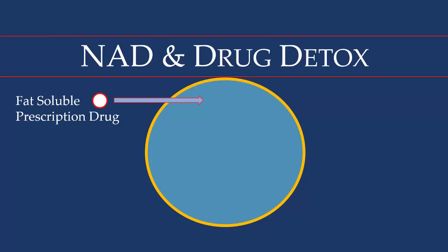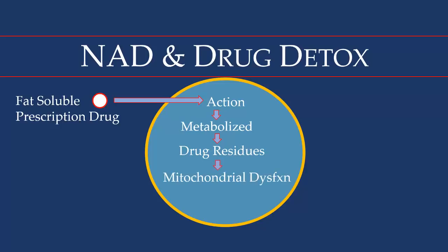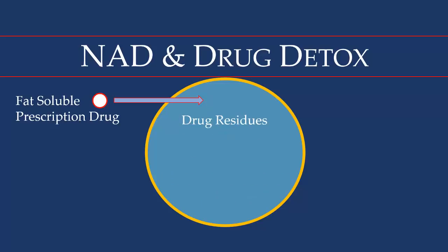So what happens when we ingest a drug? The drug enters into our cells, takes its action, and once that is complete it is metabolized into a sort of drug residue. Unfortunately, these residues can over time — depending upon the health of the individual and the health of the cell — eventually lead to mitochondrial dysfunction, which means there's a lower production of energy or ATP. Once the drug has had its action, that drug residue must be excreted from the interior of the cell to the exterior. This is an active transport — the residue does not leave the cell on its own; the cell must transport this residue outside, and this requires ATP.